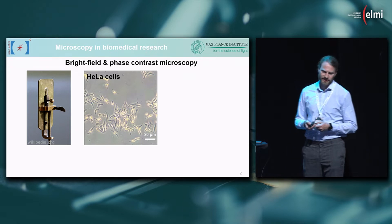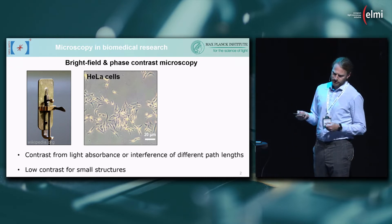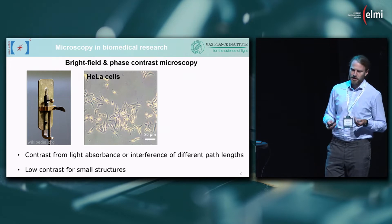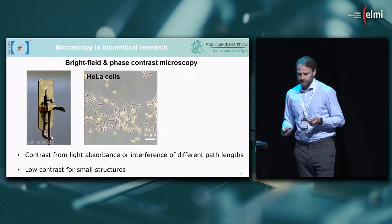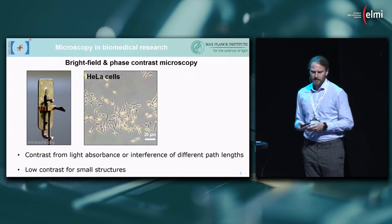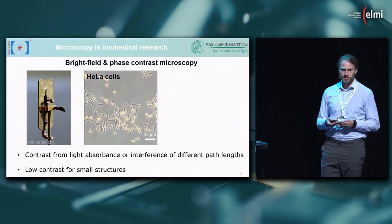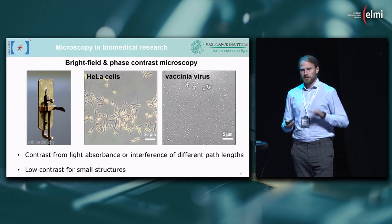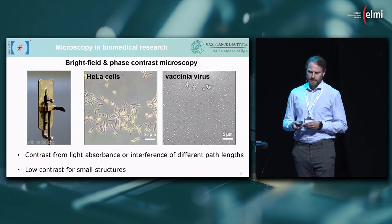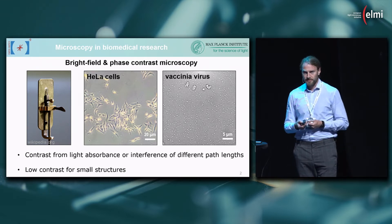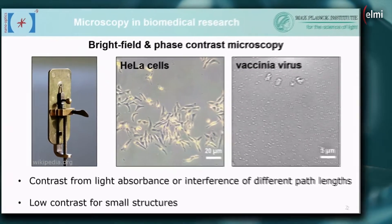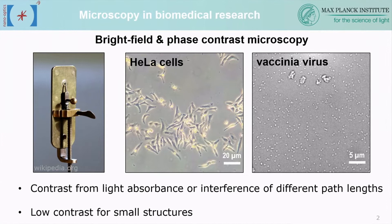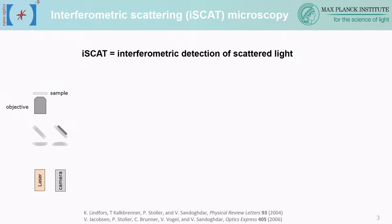For cell culture, for example, here are some HeLa cells from the lab, and the contrast in this image comes from light absorbance but also interference of different path lengths. Small structures give us very low contrast. Here's an example of vaccinia virus on a bare coverslip in a bright field transmission microscope. We can still see the viral particles at 250 by 350 nanometers because they scatter light, but if things become smaller it gets really problematic. You've just heard about iSCAT — I'll give a brief recapitulation.